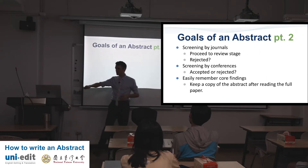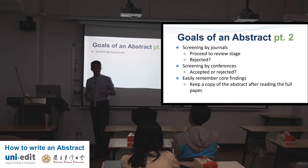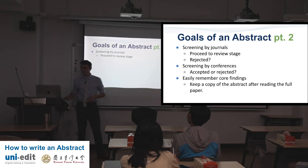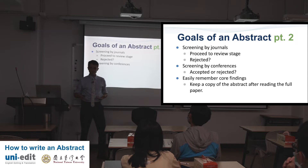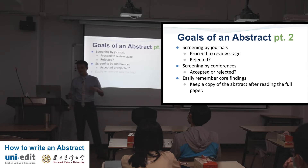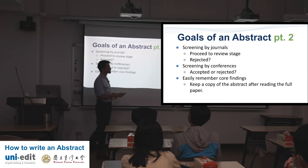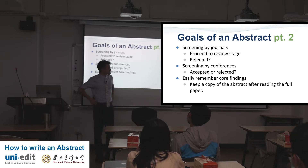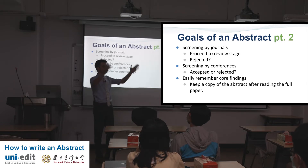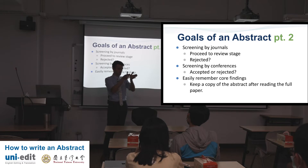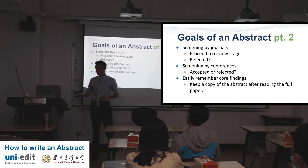Goals part two: screening by journals. When you're submitting to a journal, if you have a good abstract, you proceed to the review stage. Maybe you get rejected. Screening by conferences — accepted or rejected — and then easy-to-remember core findings. So journals and conferences use abstracts to filter. It's a filter. If your abstract is well written, you make the pass.